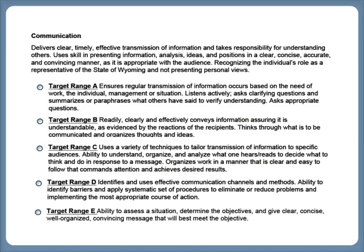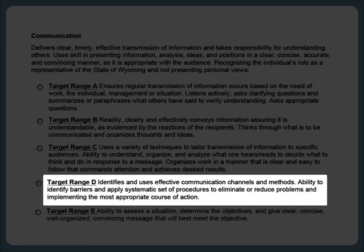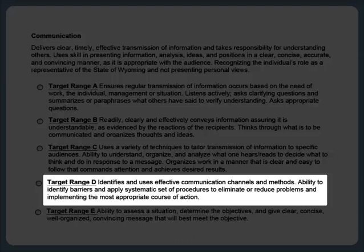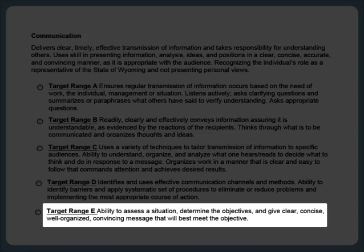So far, we've determined that Blue and Orange's positions can be expected to meet target range B, but not target range C. Just to be sure we haven't overlooked anything, let's look at target ranges D and E. Target range D represents an advanced level of competence, and a position set to this target range for communication can be expected to identify and use effective communication channels and methods, identify barriers, and apply systematic sets of procedures to eliminate or reduce problems, and implement the most appropriate course of action. Target range D does not match Blue and Orange's job duties, because they are not expected to identify communication barriers or determine appropriate courses of action. Target range E represents the highest level of competence, and should be assigned to those positions that provide direction and leadership.